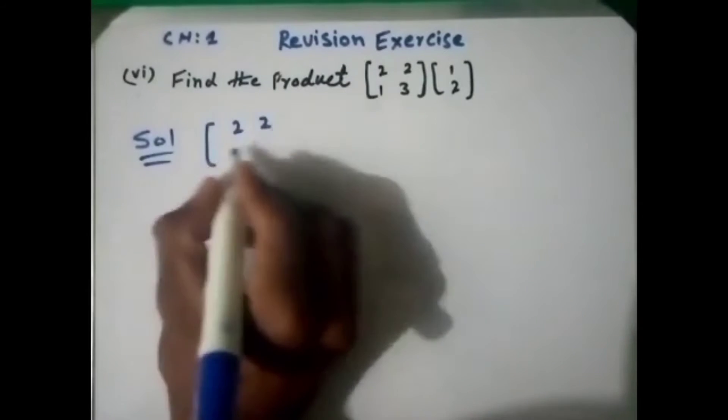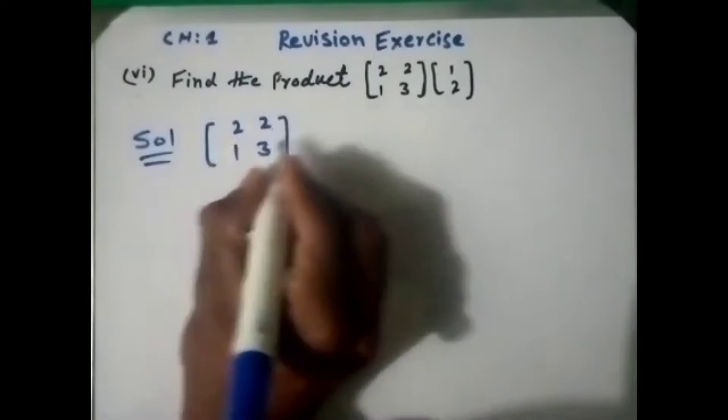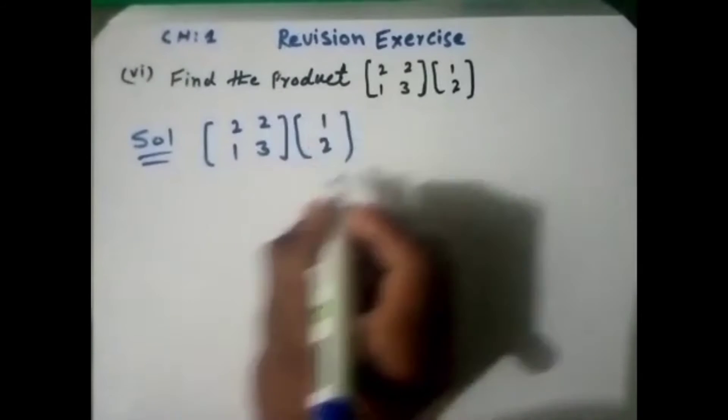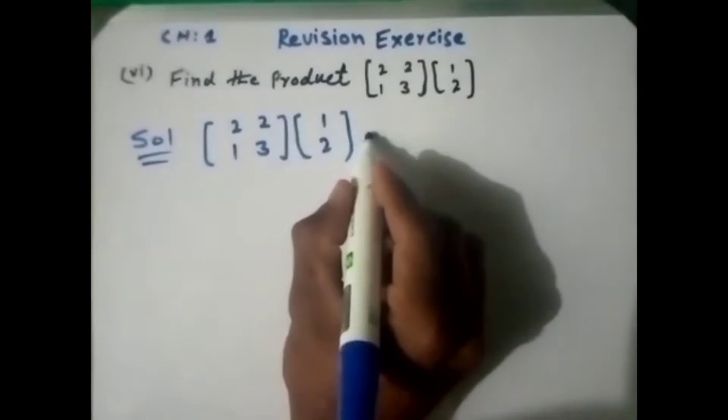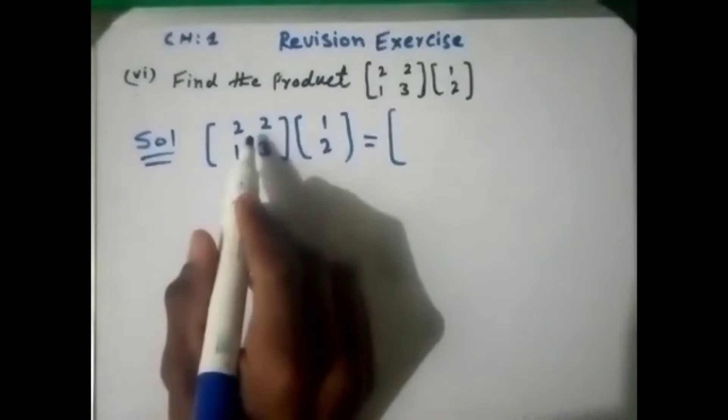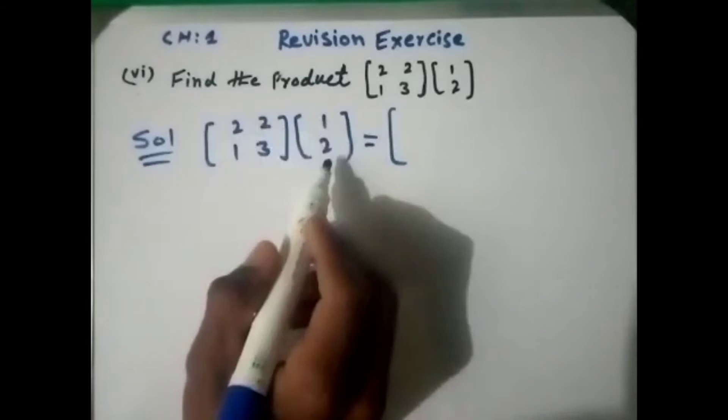The first matrix has order 2 by 2, and the second matrix has order 2 by 1. To find the product, we multiply the first row with the first column.